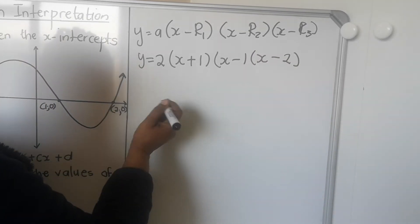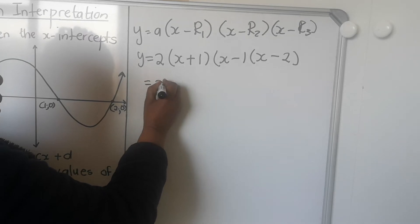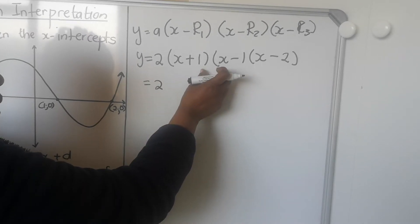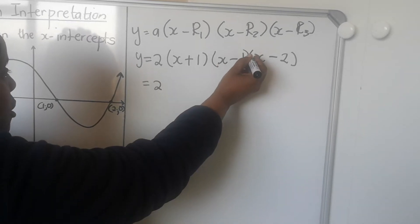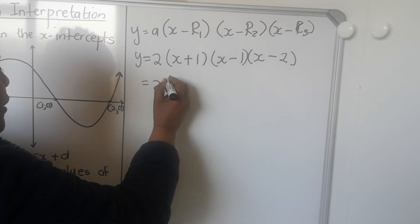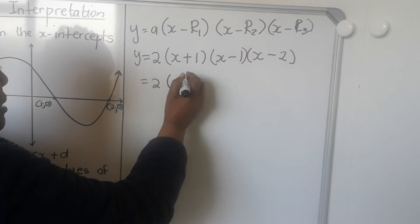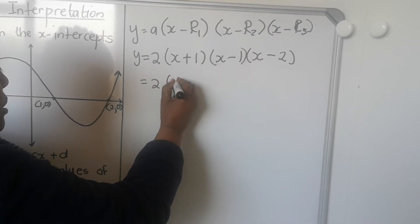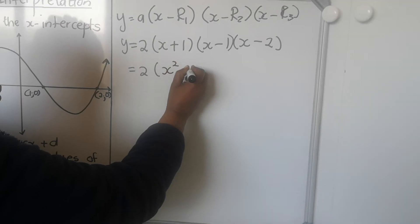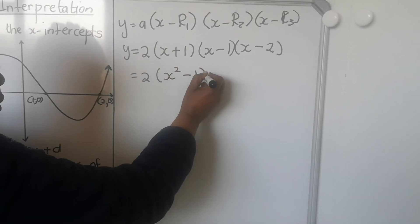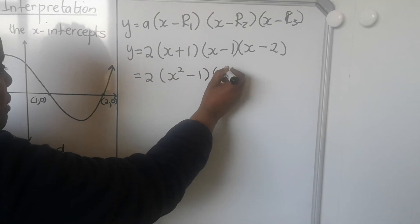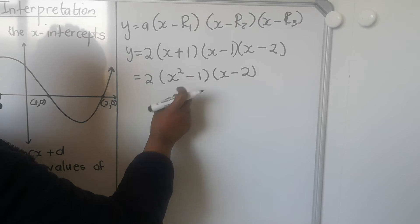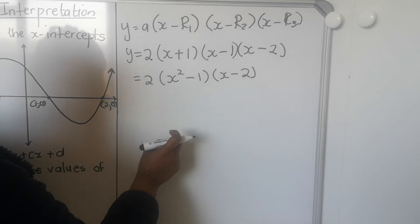Then you multiply it out. I'll start multiplying these two brackets together. When I look at these two brackets, they're difference of two squares, so I don't have to multiply them out. You need to know difference of two squares in grade 12. If you don't know, there's a video in your channel that deals with difference of two squares.